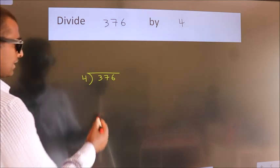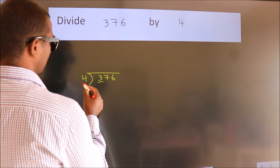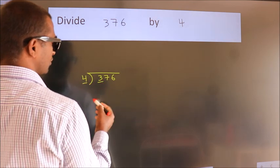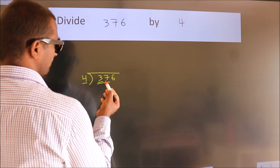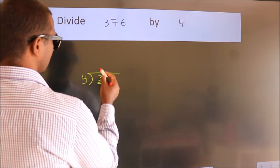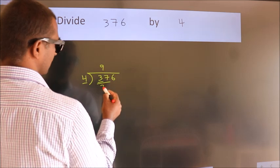Next. Here we have 3, here 4. 3 is smaller than 4, so we should take 2 numbers: 37. A number close to 37 in the 4 table is 4 times 9 equals 36.